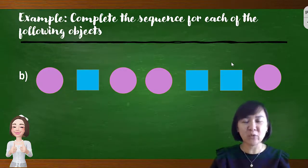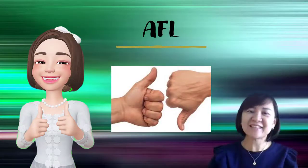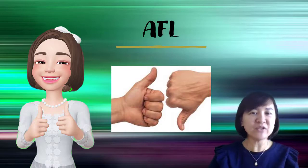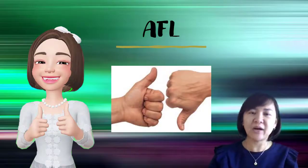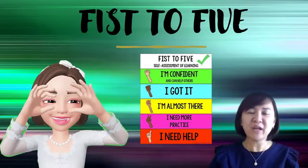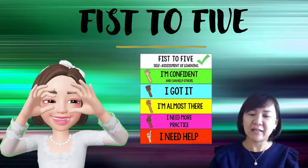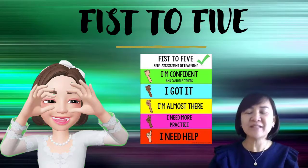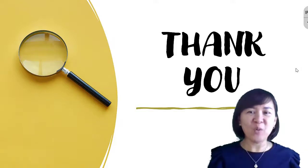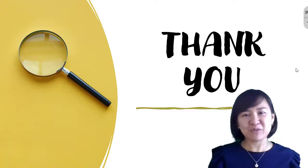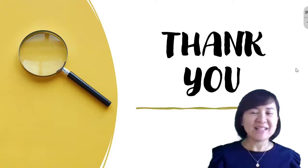For AFL — assess for learning — I hope all students can assess for themselves whether they understand, partially understand, or do not understand subtopic 1.2 Sequences. Students who cannot understand, please re-watch the video. Rate yourself from 1 to 5 on whether you need help, need more practice, are almost there, got it, or are confident about this topic. Thanks for joining my class today. Don't forget to like and subscribe to my channel. Stay tuned for the next video. See you soon, bye!